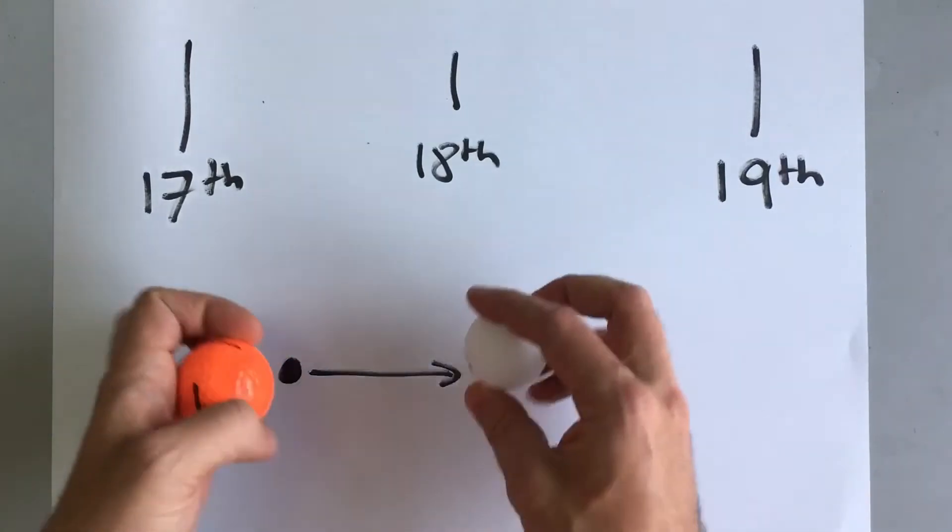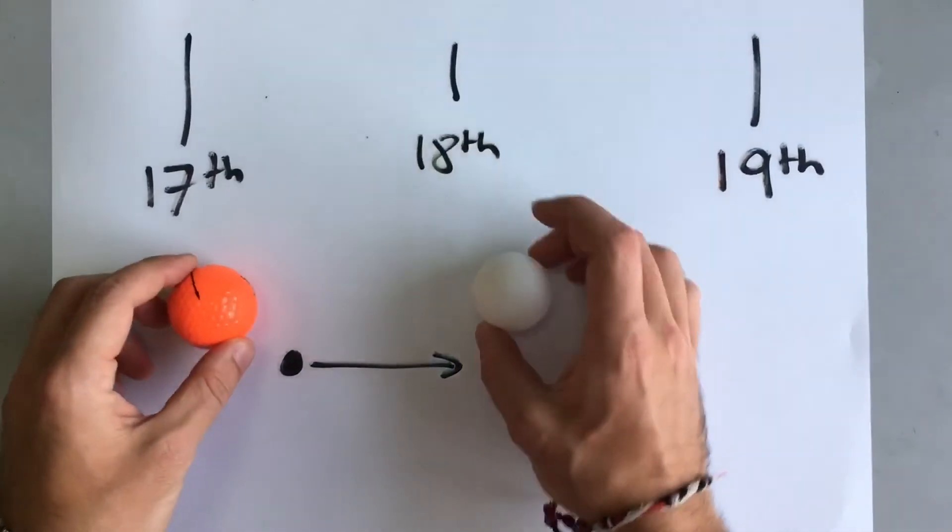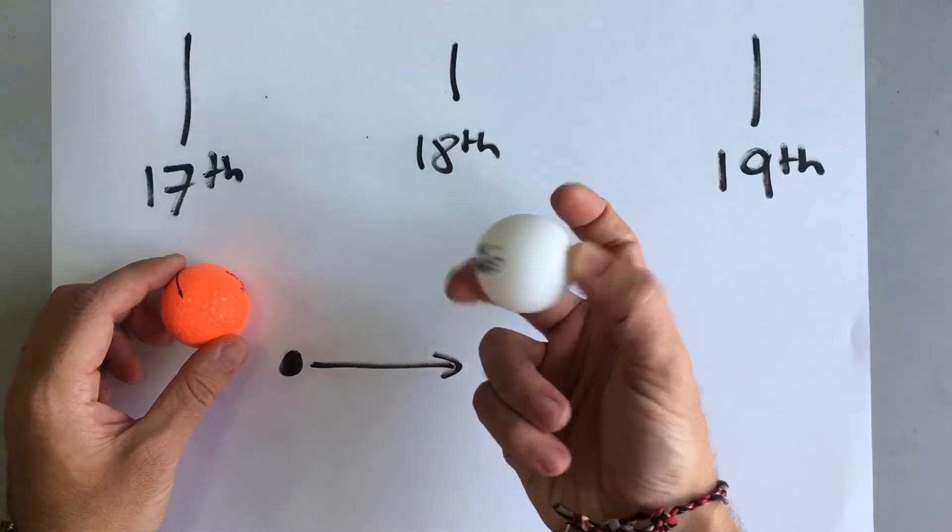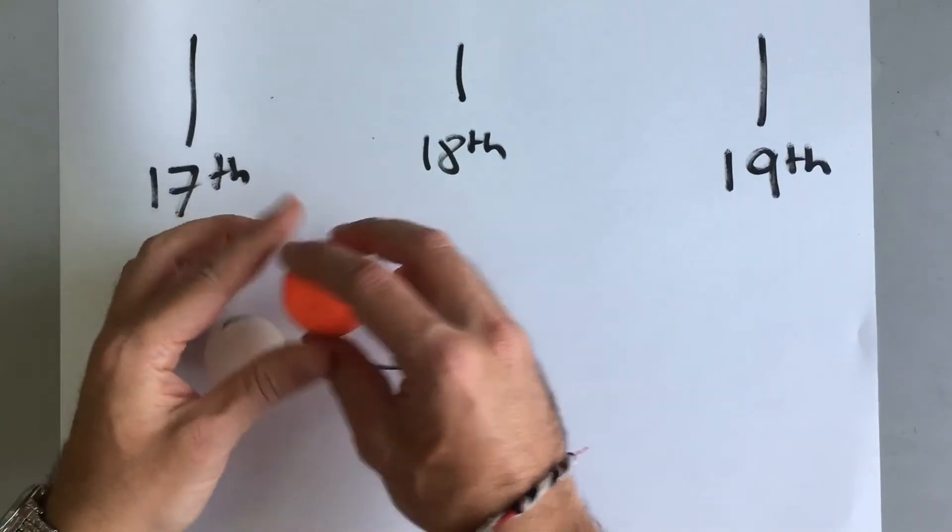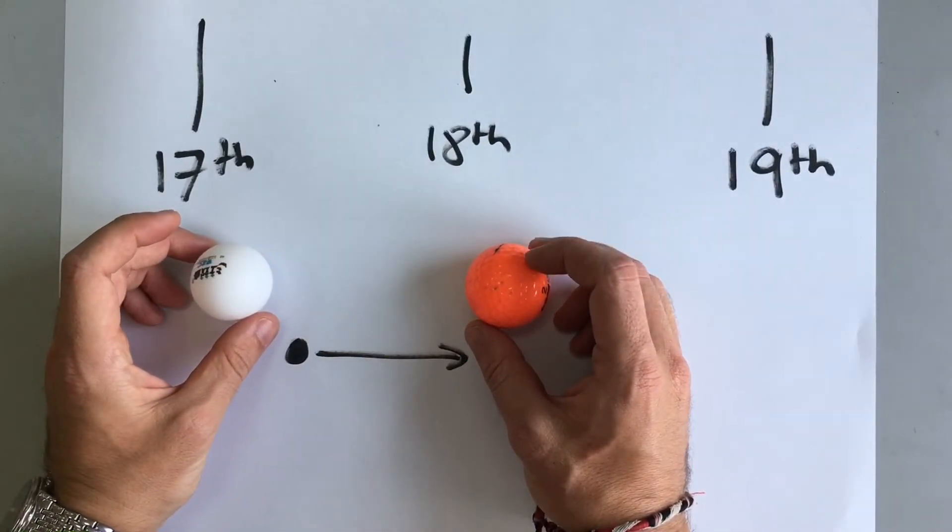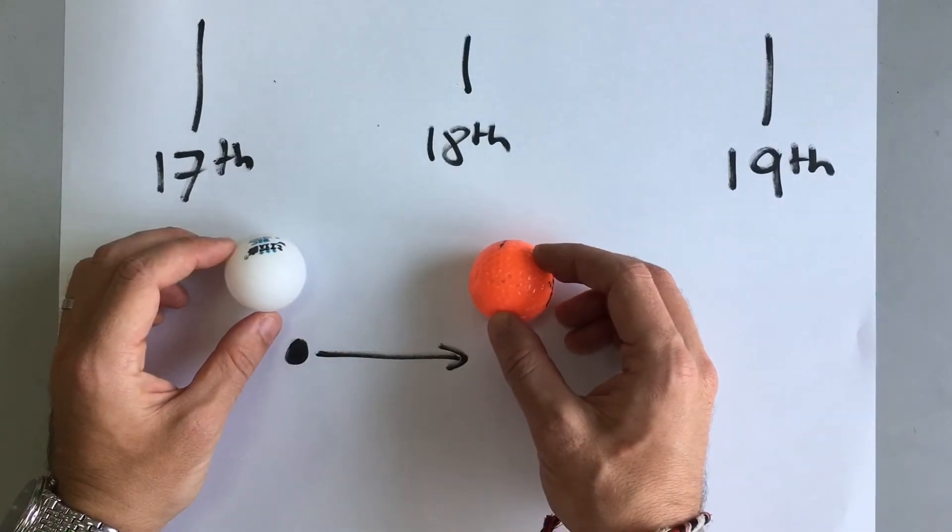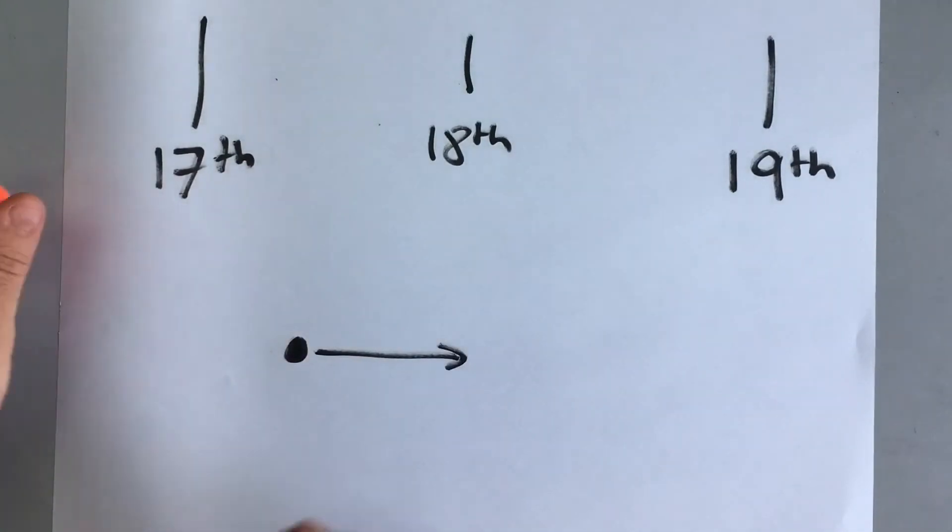If we go back to our balls example, if we have every single piece of knowledge about this ball and every single piece of knowledge about this ball, for example, if we know both of their positions and both of their momentum, then we can predict exactly what's going to happen when they collide.